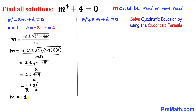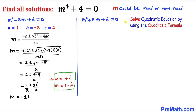We can see that 2 and 2 reduce to 1, so m = 1 ± i. Splitting the positive and negative signs gives us two solutions: m = 1 + i and m = 1 - i.